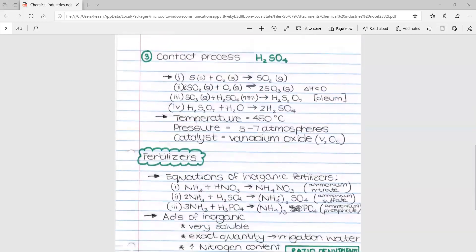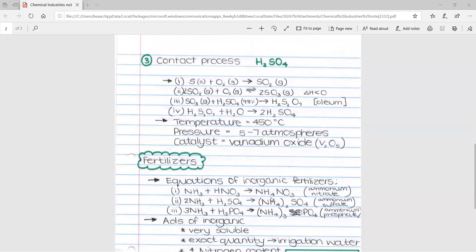We then move on to our third process, which is the contact process. This is used to form H2SO4, which is also known as sulfuric acid. This process has four different equations, which I've written down here. The first being S plus O2 to form SO2.